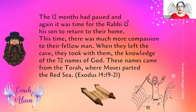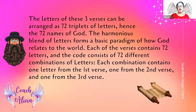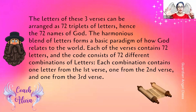This comes from the book of Exodus, chapter 14, verses 19 through 21. You can see Moses over here parting the Red Sea. The letters of these three verses can be arranged into 72 triplets of letters — hence the names of God. Verses 19, 20, and 21 are laid right next to each other in three lines, and the harmonious blends of the letters form a basic paradigm of how God relates to the world.